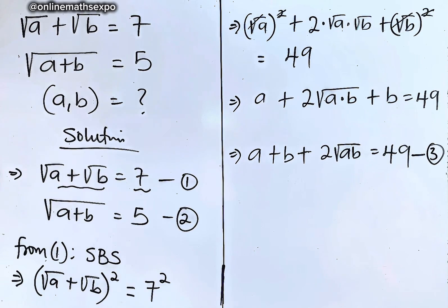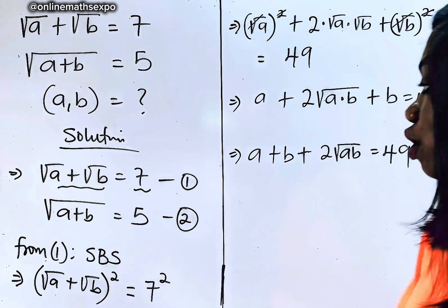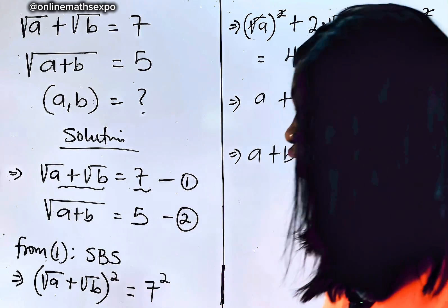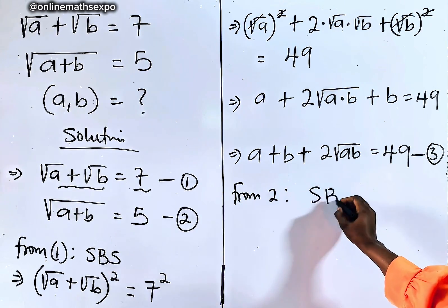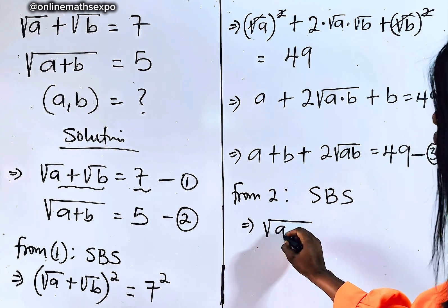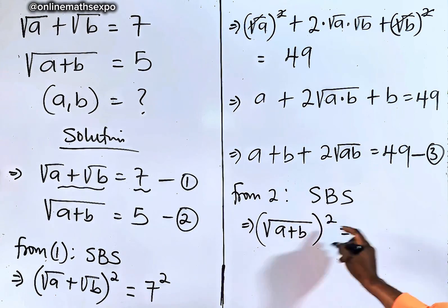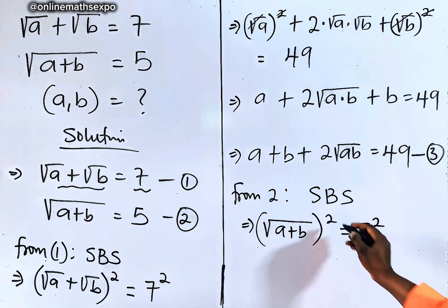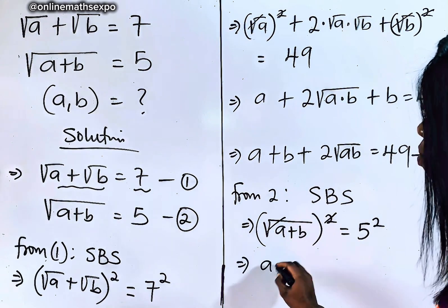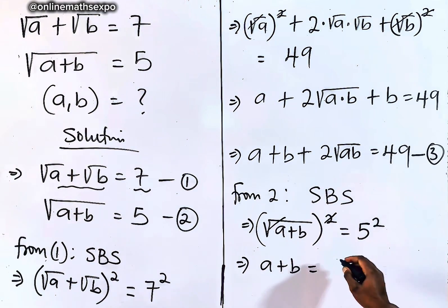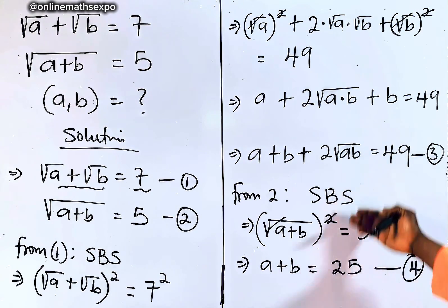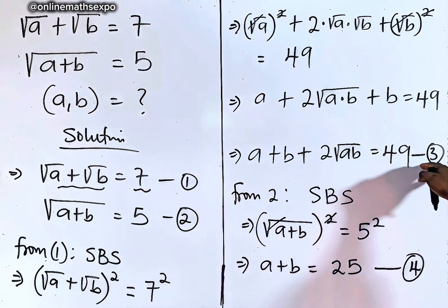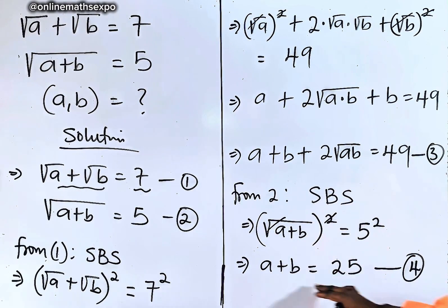Now let's go back to the second equation. We need to remove the square root, so from equation 2 we also square both sides. Squaring √(a + b) cancels the square root, leaving a + b, and 5² = 25. So we have a + b = 25. Label this equation 4.